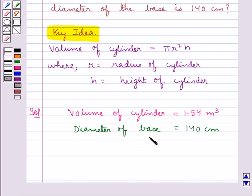Now the diameter is given in centimeters and the volume is given in meters. So first let's convert the diameter in meters. To convert 140 centimeters into meters we divide 140 by 100. This becomes equal to 1.4 meters. So we have diameter of base is equal to 1.4 meters.